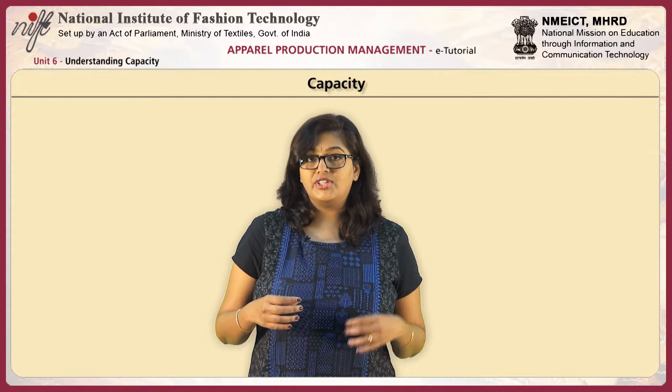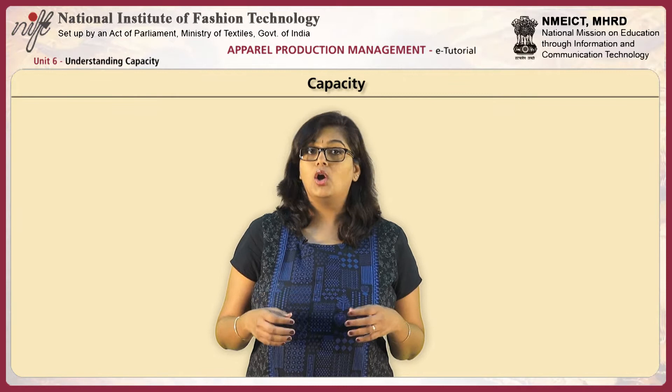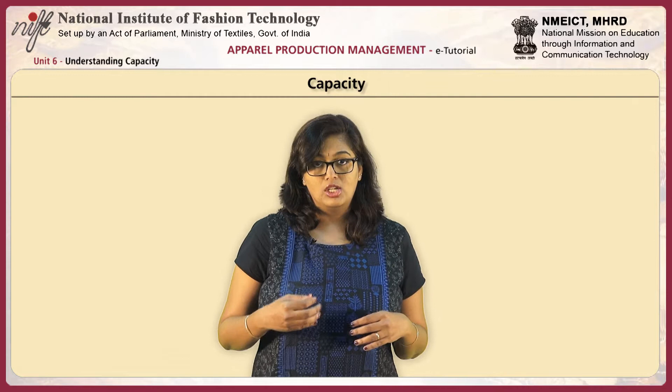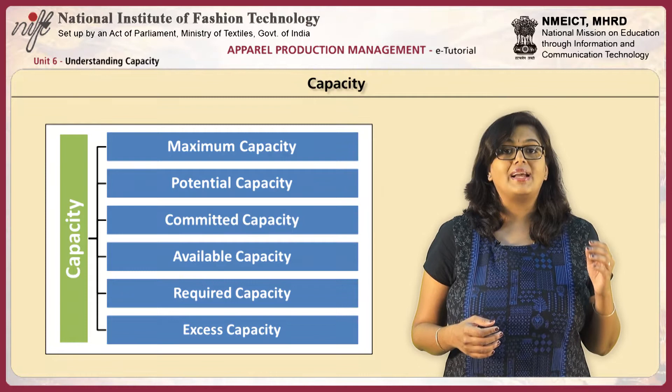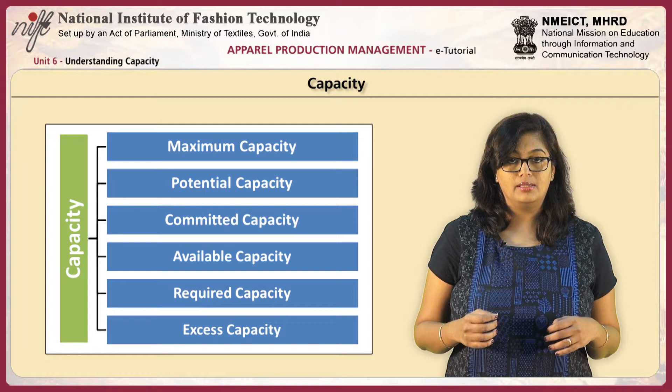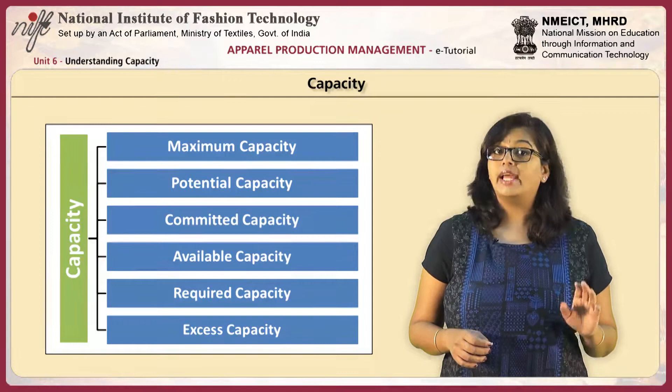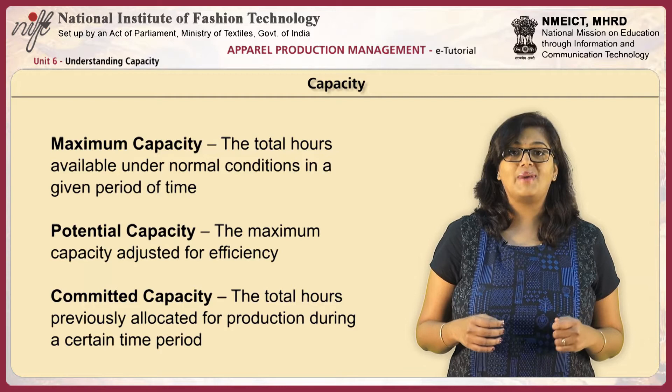Under capacity, there are various terminologies used to identify and understand what is our current requirement and what should be our committed requirement. The terminologies are: maximum capacity, potential capacity, committed capacity, available capacity, required capacity, and excess capacity. Let me go in detail what each are.